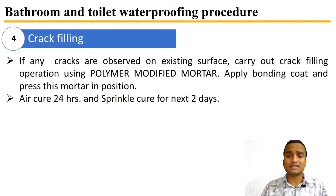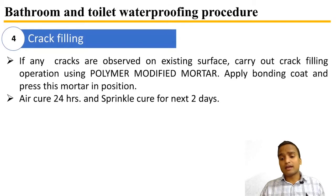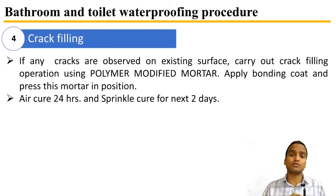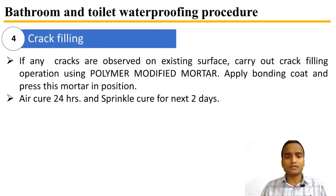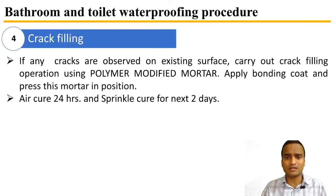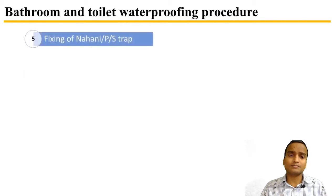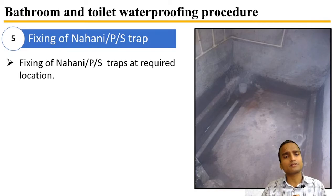For crack filling: if any cracks are observed on the existing surface, crack filling is carried out using polymer-modified mortar — mortar to which polymerizing admixtures have been added. A bonding coat is applied and the mortar is pressed into position. The surface is then left for curing under normal air and environmental conditions for 24 hours, with water sprinkling for curing over the next two days.